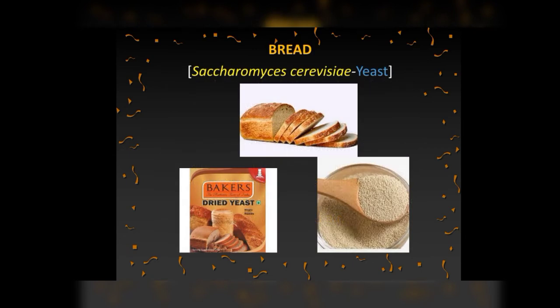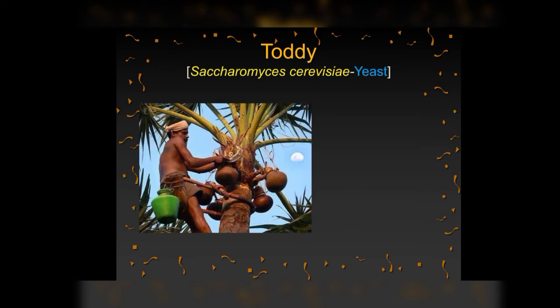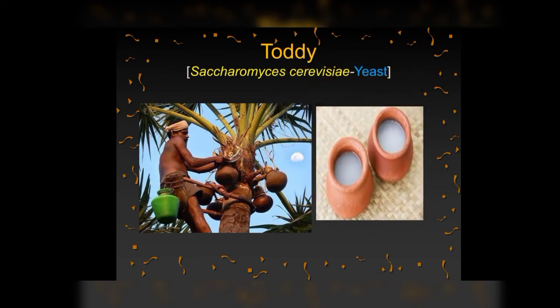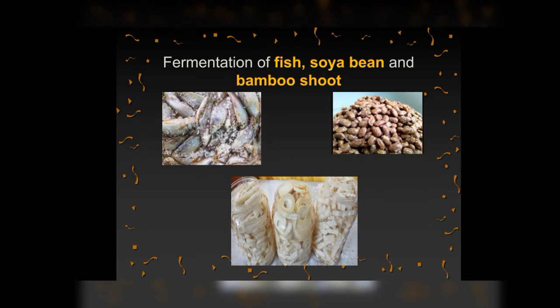The dough used for making bread is fermented using baker's yeast, Saccharomyces cerevisiae. Toddy, a traditional drink of southern India, is made by fermenting sap from palms, also using Saccharomyces cerevisiae. It is also used to ferment fish, soybean, and bamboo shoots to make various food items.